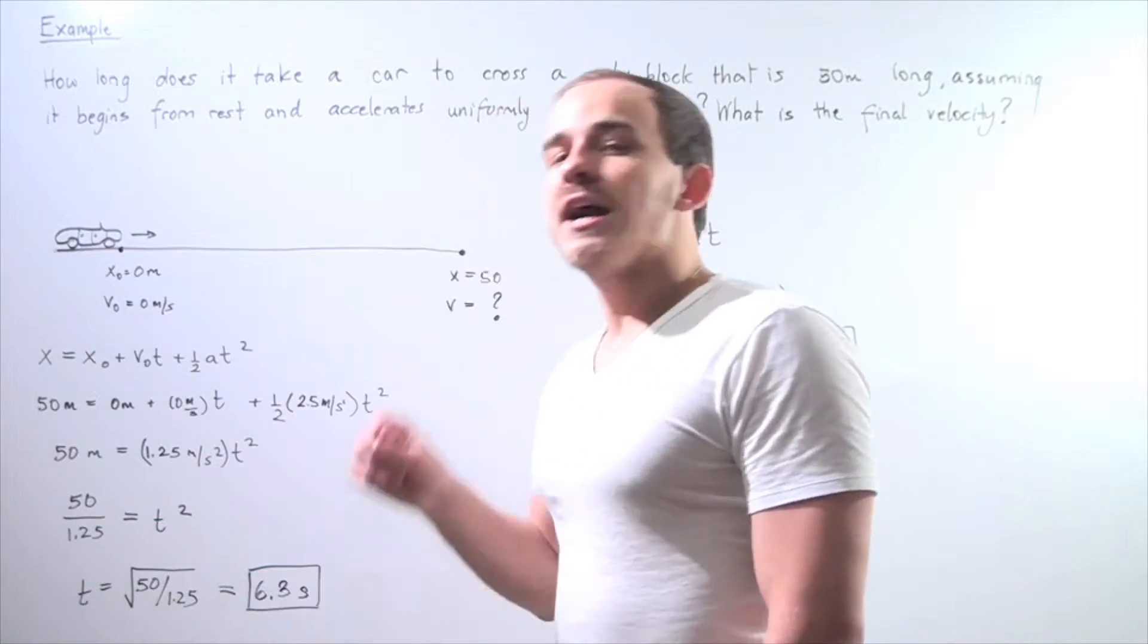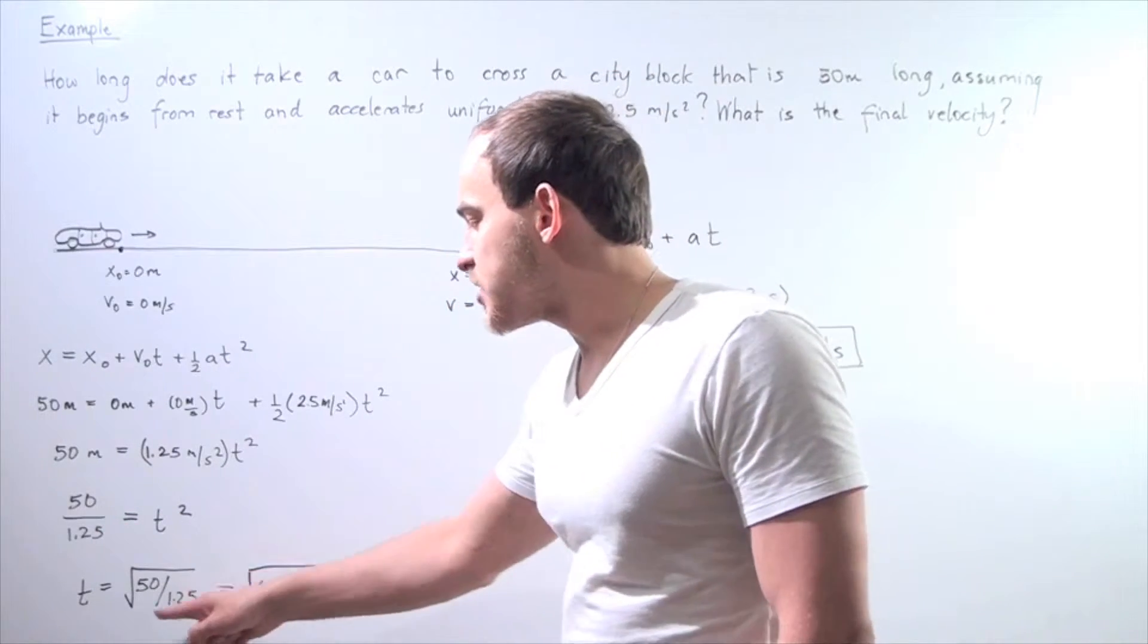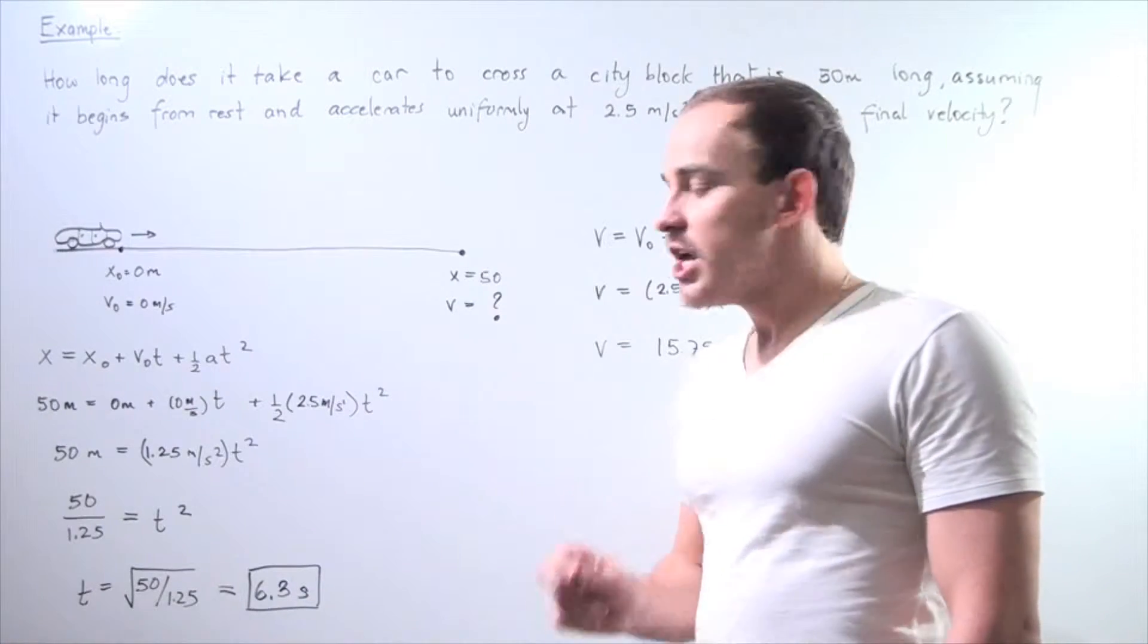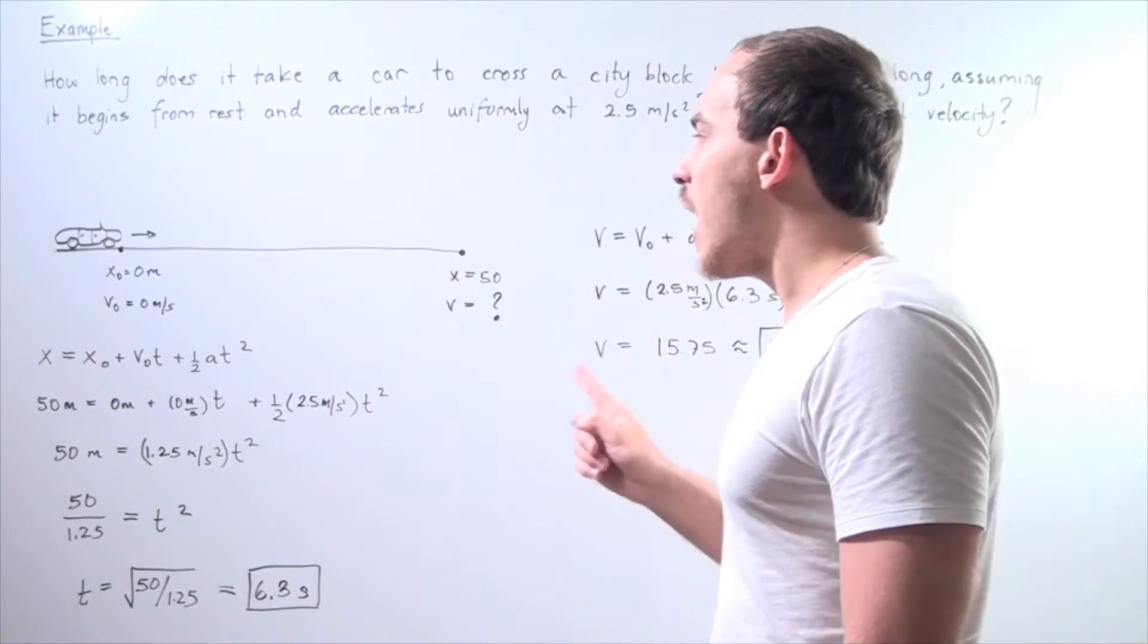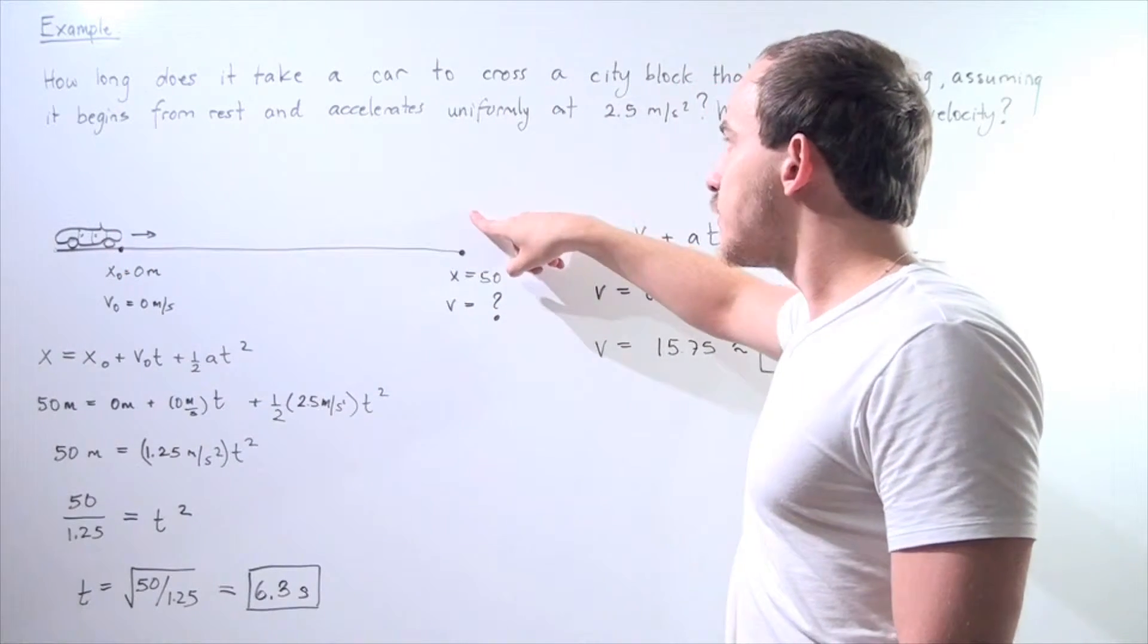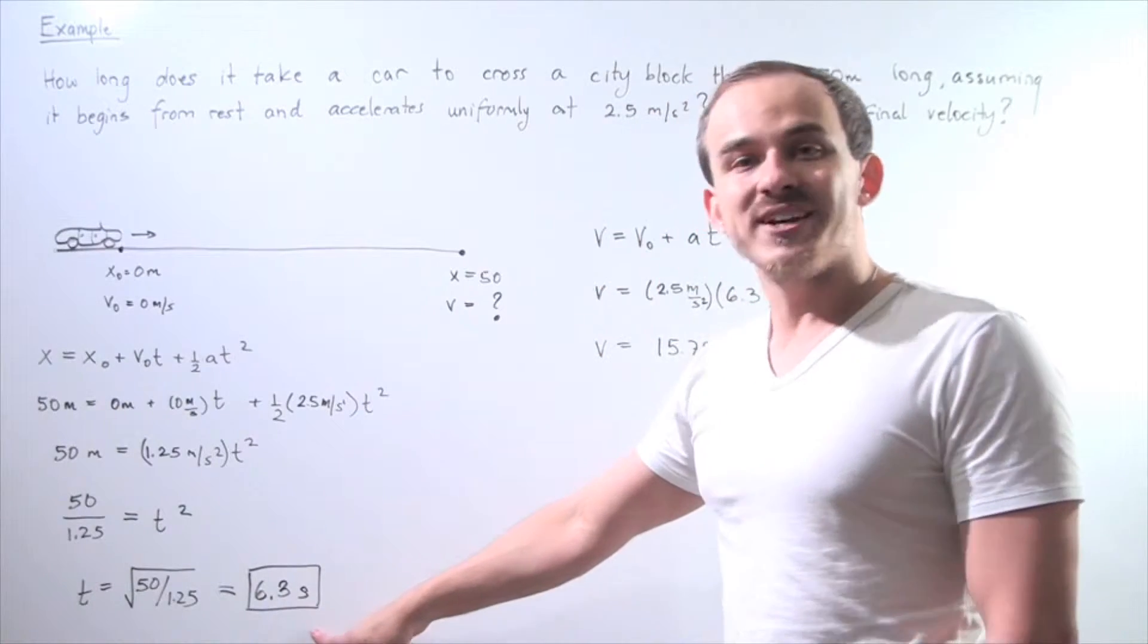50 divided by 1.25, radical of that gives us, so radical 40 is about 6.3 seconds. It takes our car to travel a distance of 50 meters with this acceleration 6.3 seconds.